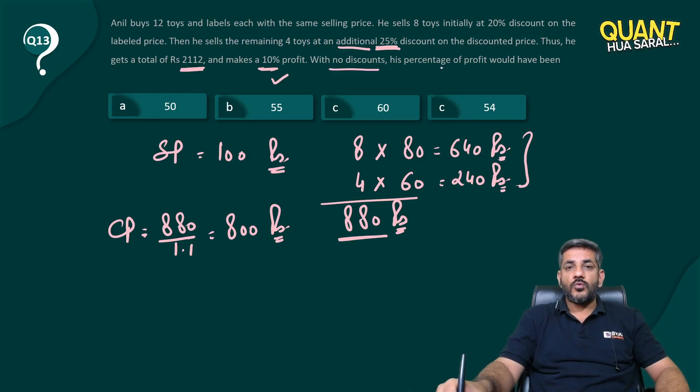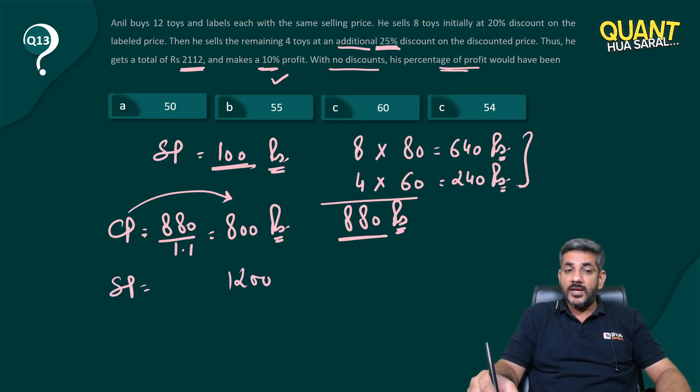With no discounts, what is his percentage profit? If there's no discount, all of them would be sold for Rs. 100 each. The cost price of all toys is Rs. 800. If there is no discount, all are sold for Rs. 1200. Articles of Rs. 800 sold for Rs. 1200 gives 50% profit. So 50% is the right answer for this question.